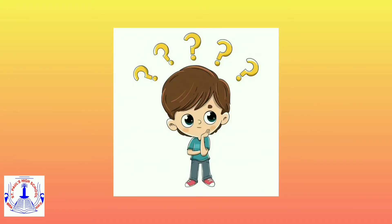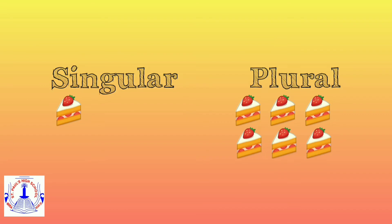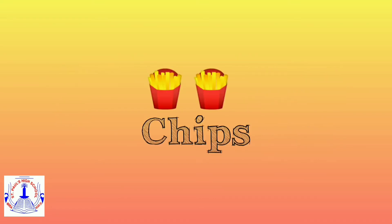What do you mean? When there is only one of something, we use singular naming words. If there was only one of these, we could say one cake, because cake is a singular word. But we have more than one cake, right? When we have more than one of something, we use plural naming words. So we say six cakes. Similarly, we have more than one chip, right? So we say chips and not chip, because chips is the plural form.